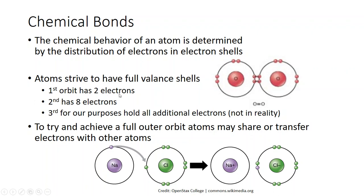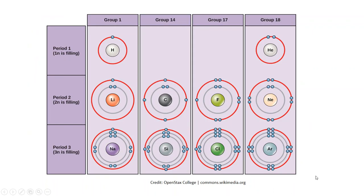The first orbital always has two electrons when full; the second has eight, and for our purposes the rest reside in the third. Atoms always try to achieve a full outer shell. Hydrogen only has one electron, so it will want another or give this one away. Helium has two and is full and happy. Neon and argon both have eight in their outer shell and are stable.